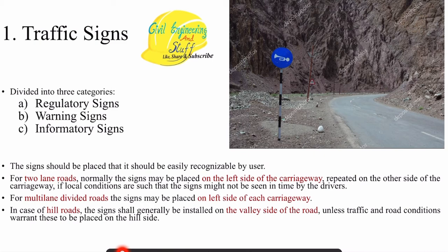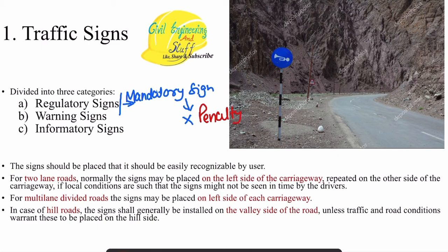To easily distinguish what each sign means: regulatory signs are also called mandatory signs. If you do not abide by these signs they will result in some form of penalty. So if you ever get confused about which kind of traffic sign is shown in front of you, just think — if I do not follow it, will I be penalized? If yes, then that is a regulatory or mandatory sign.